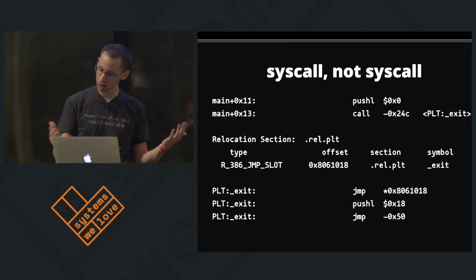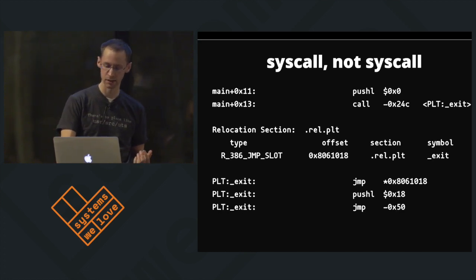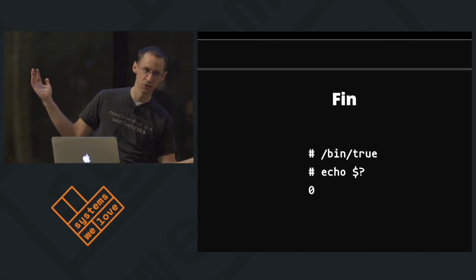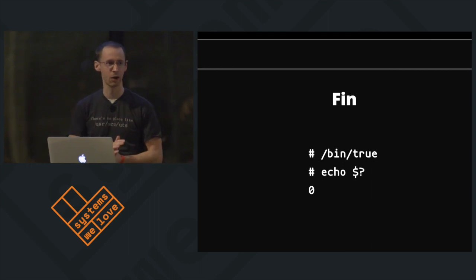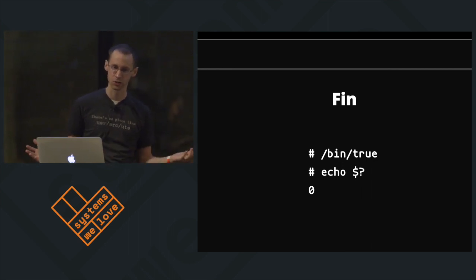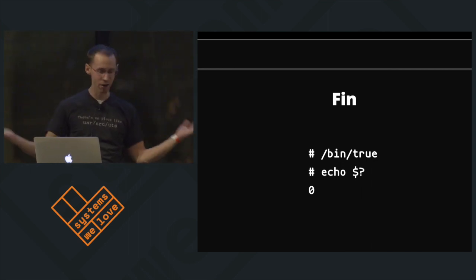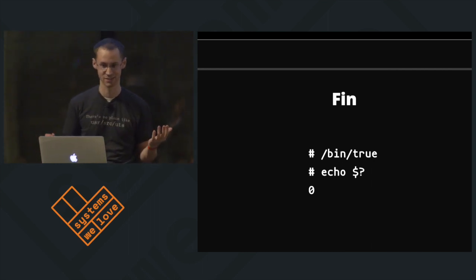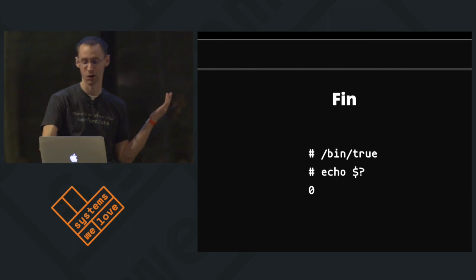So we have all of these pieces, and what do we get? We get bin true, and we echo, and we've got our zero return code. Everything has worked together to bring us this zero.